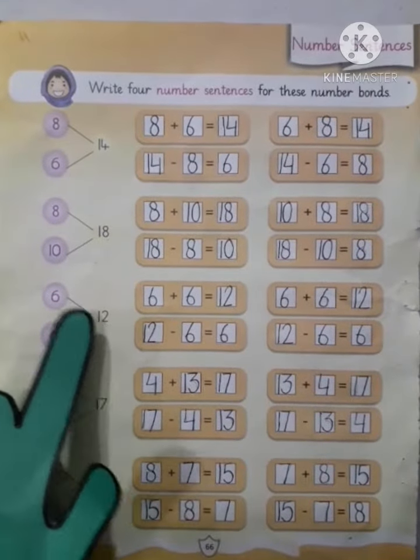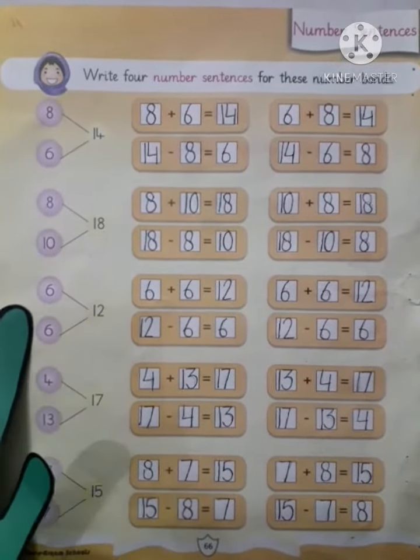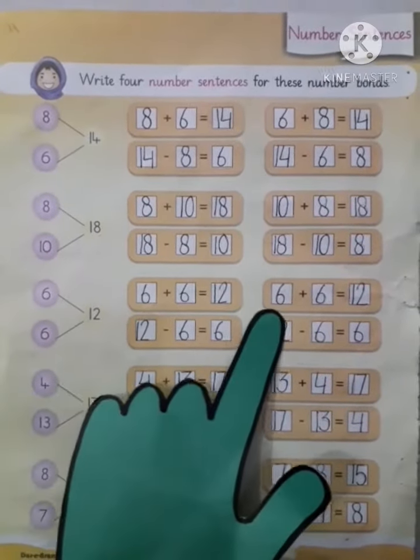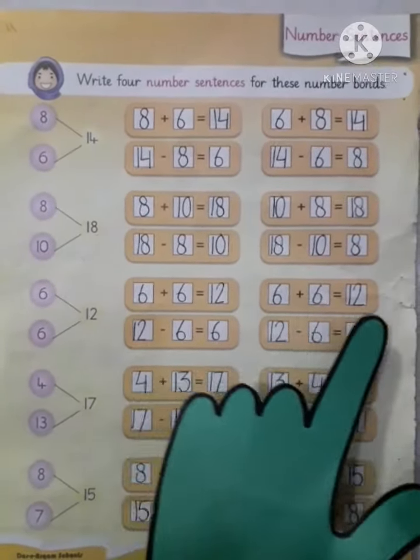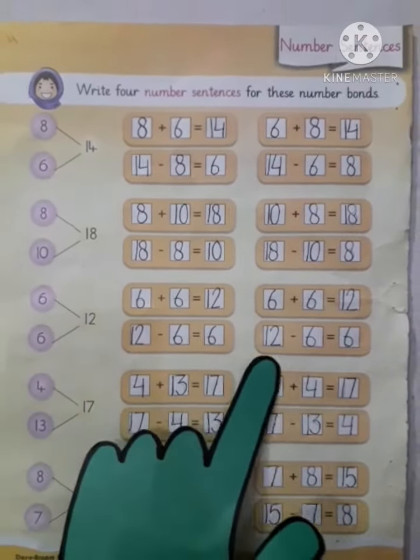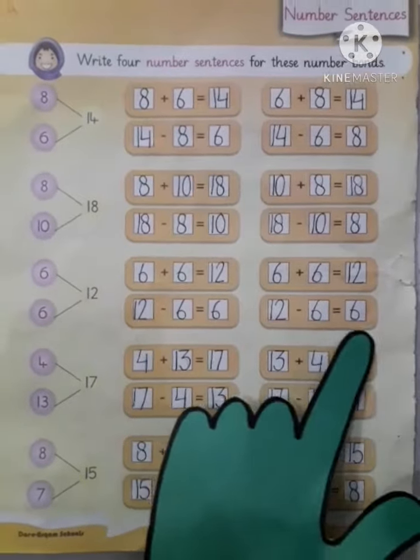Next question. The whole number is 12. 6 plus 6 equals 12, and 6 plus 6 equals 12. Now do subtraction: 12 minus 6 equals 6, and 12 minus 6 equals 6.